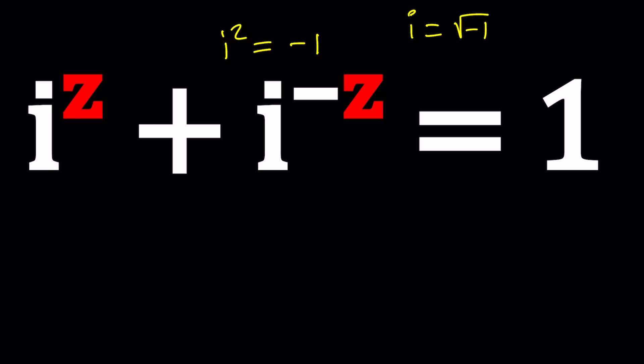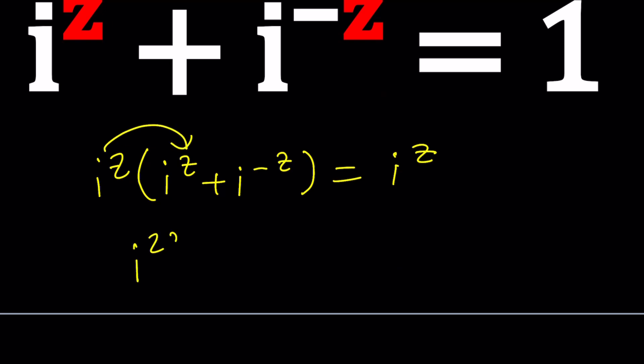I'm going to write the i to the power of negative z as 1 over i to the power of z. You can also think of it as multiplying both sides by i to the power of z, which is probably easier. So i to the z multiplied on both sides gives me i to the z on the right hand side. And when I distribute, this gives me i to the power of 2z plus i to the power of 0, which should be 1, and that's equal to i to the power of z.